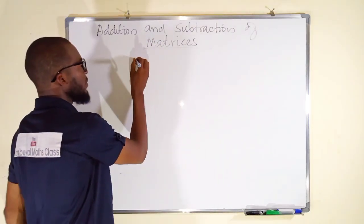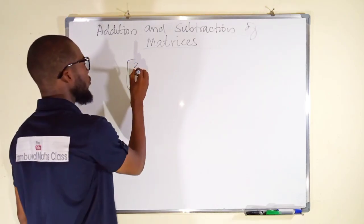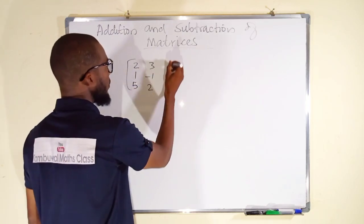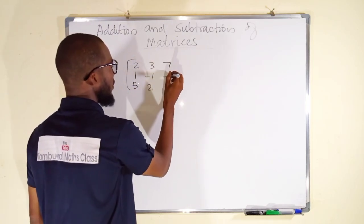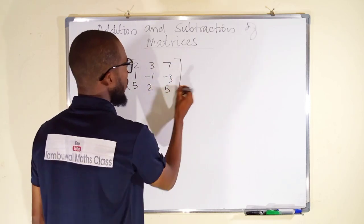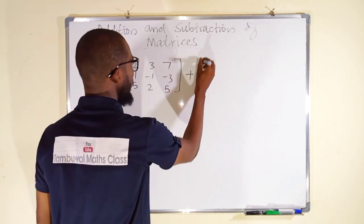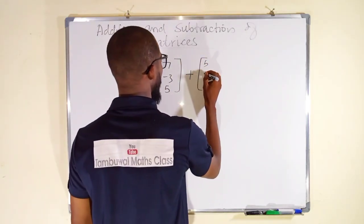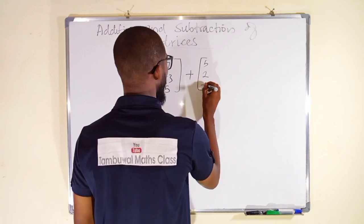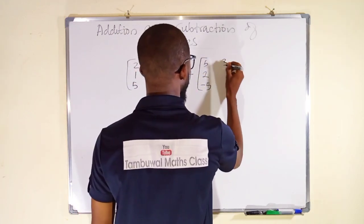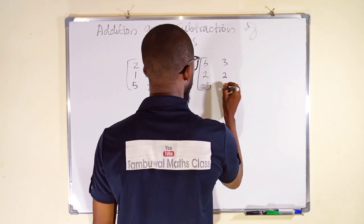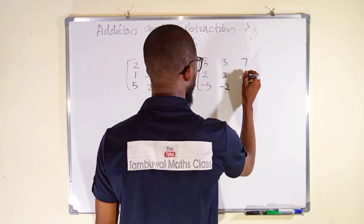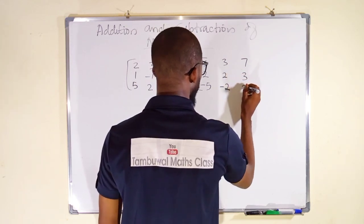We want to add two three by three matrices: the first is two, one, five, three, negative one, two, seven, negative three, five; together with another three by three matrix: five, two, negative five, three, two, negative two, seven, three, and three.